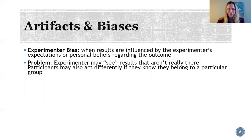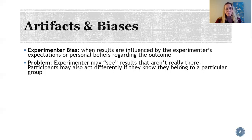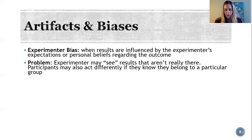This is an example of experimenter bias — when results are influenced by the experimenter's own personal beliefs or expectations of what they think might happen. This is a real problem because the experimenter might see results that aren't really there, and similarly, participants themselves might act differently if they know they are receiving a certain kind of treatment or belong to a certain group.